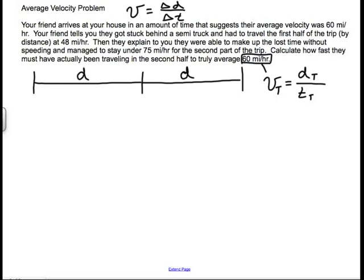You will write down this particular equation once for each segment. And so I have v1 is equal to d1 divided by t1. I will write it again for this one: v2 is equal to d2 over t2. And then you can always write it a third time, which is for the total.